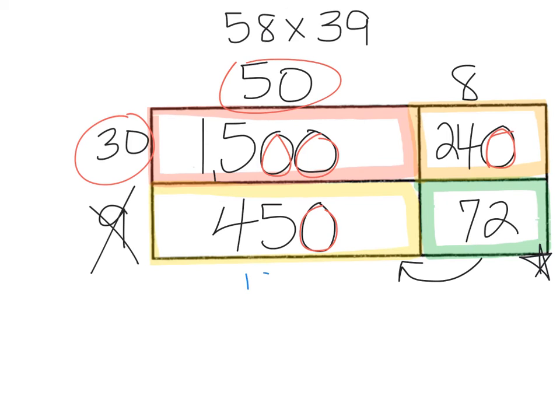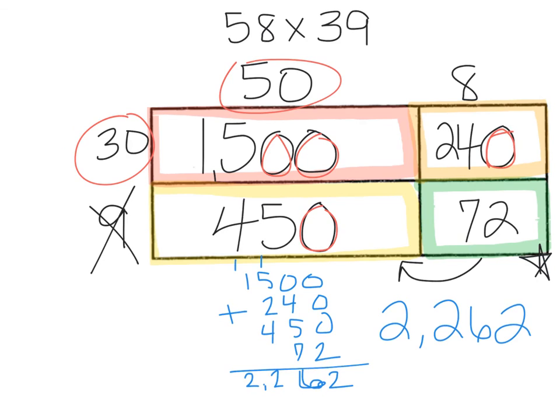We are going to take and add these up. So we have 1,500, 240, 450, and 72. That's going to give us a 2 in the ones. 5 and 4 is 9 plus 7 is going to give us the 6—16. And then we've got 5 and 1 is 6 plus 2 is 8 plus 4 is going to give us 12, and then 1 and 1 is 2. So our answer is 2,262 for this box.